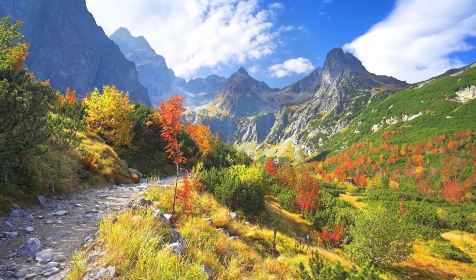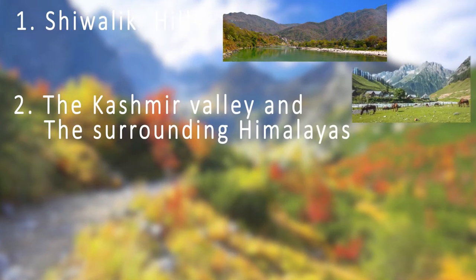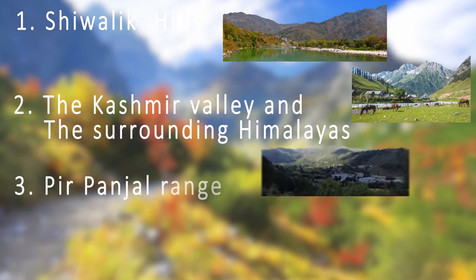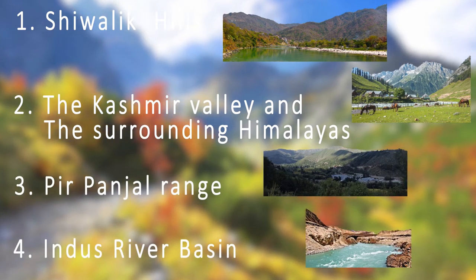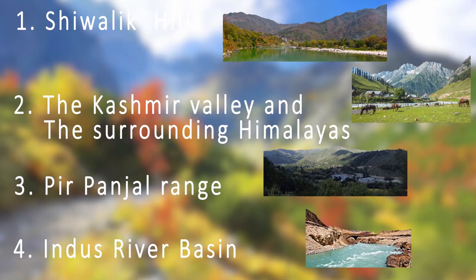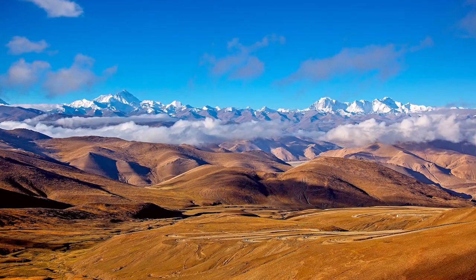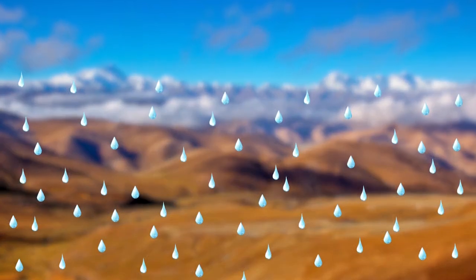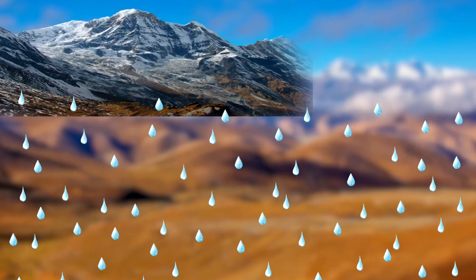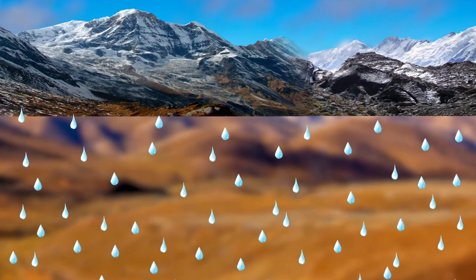Jammu and Kashmir can be divided into four geographical regions: the Shivalik Hills, the Kashmir Valley and the surrounding Himalayas, the Pirpanjal Range, and the Indus River Basin comprising of Leh and Kargil. Aksai Chin is geographically part of the Tibetan Plateau and the Changtang. The region is almost uninhabited and sees little precipitation due to the Himalayas and other mountains to the south soaking up the Indian monsoon.